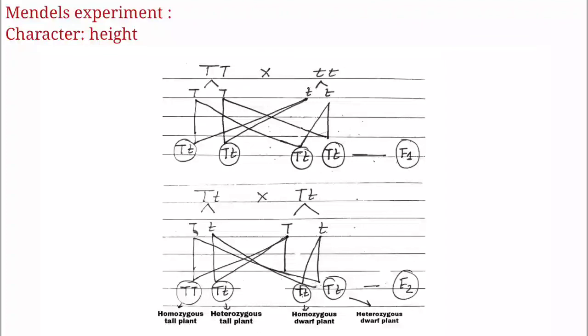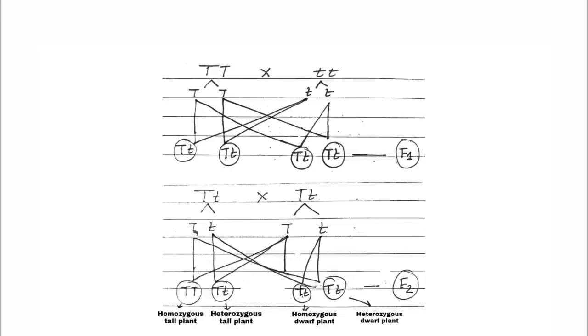Mendel concluded that even the dwarfness character present in F1 generation got expressed in the F2 generation. I hope you understood Mendel's experiment and the terminologies covered: autosome, sex chromosome, diploid, haploid, homozygous, heterozygous, alleles, heredity, and evolution. Evolution will be studied in detail later. Right now we are focusing on the first topic, heredity. Please study with the schematic representations as they are essential. Thank you.